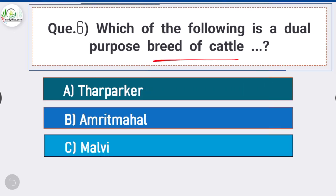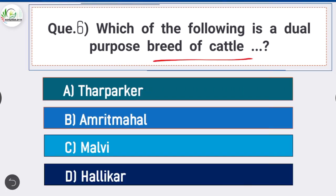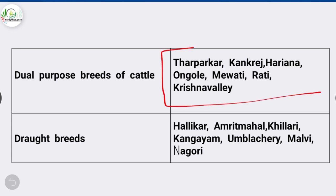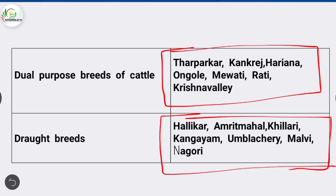Question number six: which of the following is a dual purpose breed of cattle? The answer is option A - Tharparkar. Tharparkar is a dual purpose breed of cattle. Other dual purpose breeds include Kankrej, Haryana, Ongole, Mewati, Rathi, and Krishna Valley. Draught breeds of cattle include Hallikar, Amrit Mahal, Killari, Kangayam, Umblachery, Malvi, and Nagori.